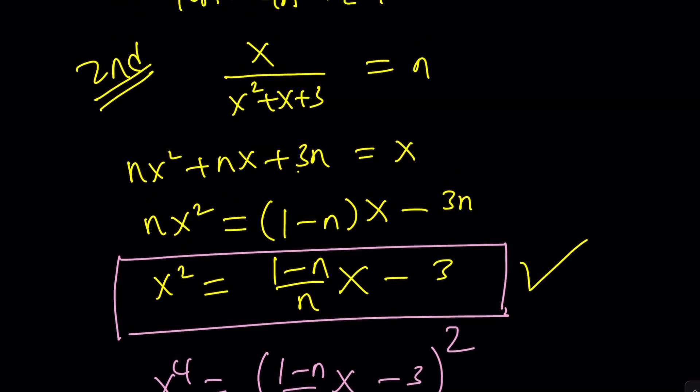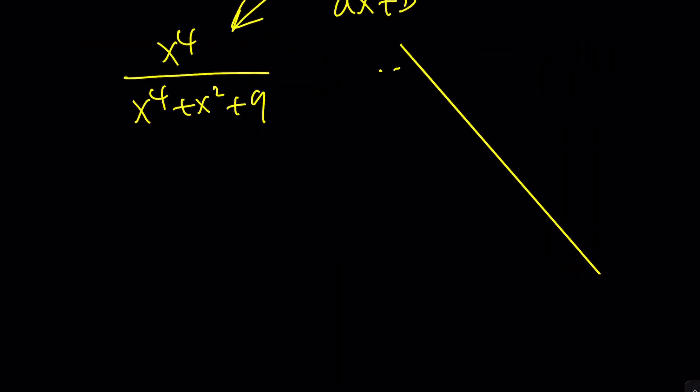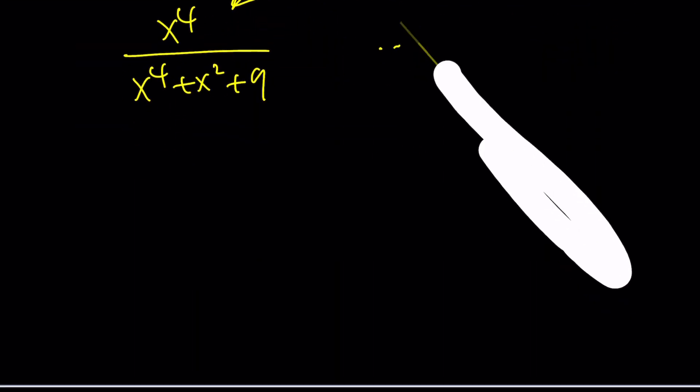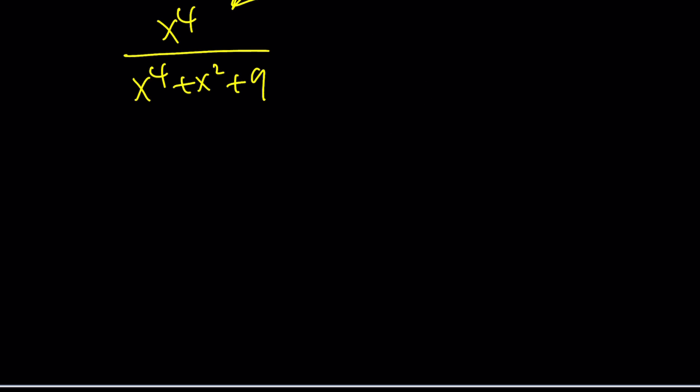That's why we have something called the third method which is usually the best. Let's go ahead and take a look. So we have the following again. Notability and the pencil going crazy all over the place. I don't know why.